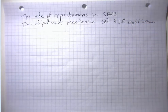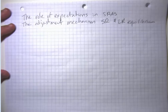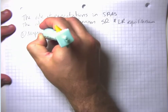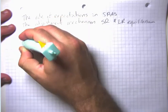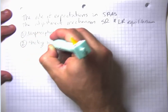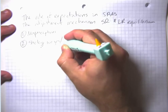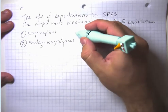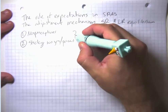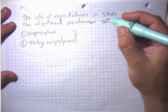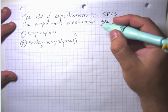Remember that both of our stories about why short-run aggregate supply slopes up relied on either misperceptions about what the price level actually was, or sticky wages or prices. In either case, it's the fact that prices are coming in different than people's expectations that causes them to do something abnormal.